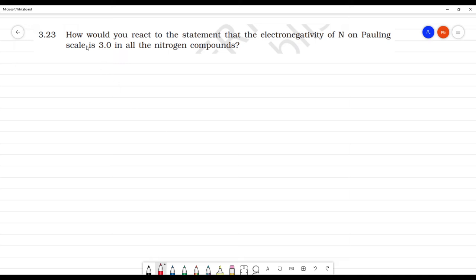How would you react to the statement that the electronegativity of nitrogen on Pauling scale is 3.0 in all nitrogen compounds?